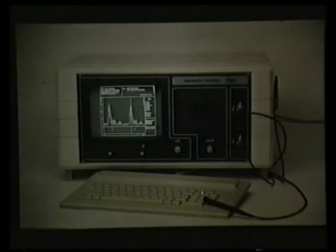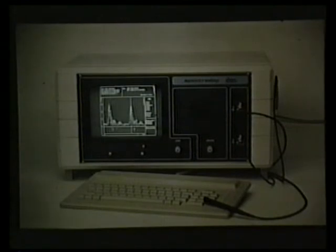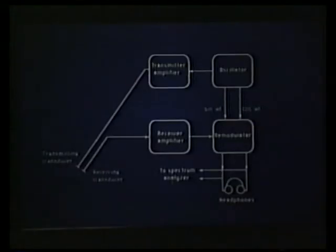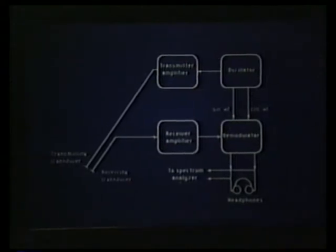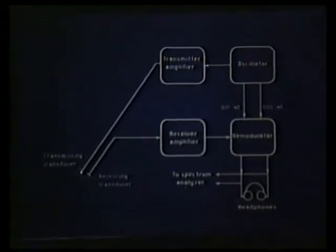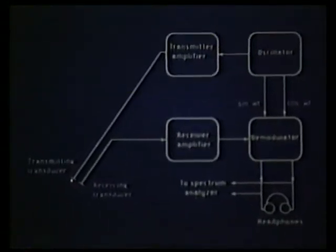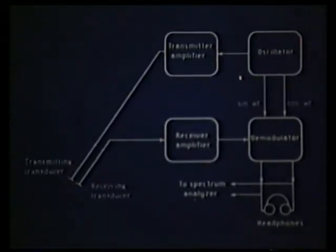As an example of a continuous wave Doppler device, you can see a probe with two transducers and a screen for the display of velocity tracings. The general diagram of a CW Doppler system is shown here, with the transmitter transducer and the receiver transducer indicated separately.